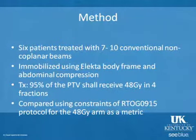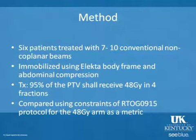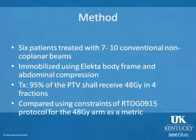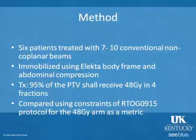We looked at six patients treated with seven to ten conventional non-coplanar beams, immobilized using the elective body frame and abdominal compression. We prescribed that 95% of the PTV should receive 48 gray in four fractions for all six patients, and used the constraints of RTOG 0915 for the 48 gray arm as a metric.